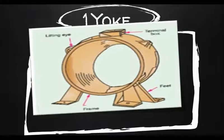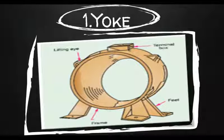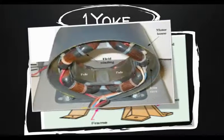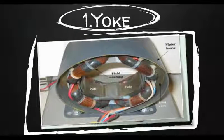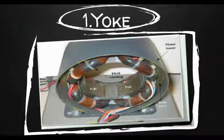Yoke: The outer frame or yoke serves two purposes. It provides mechanical support to the poles and acts as a protecting cover for the whole machine. It also carries the magnetic flux produced by the poles and hence completes the magnetic circuit. In small generators, where cheapness rather than weight is the main consideration, yokes are made up of cast iron, as you can see in the figure.